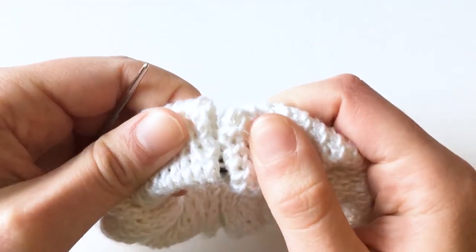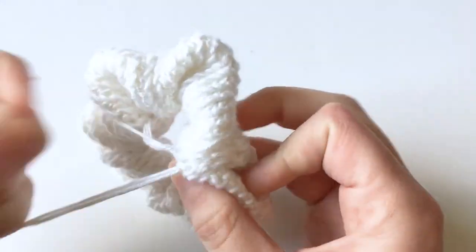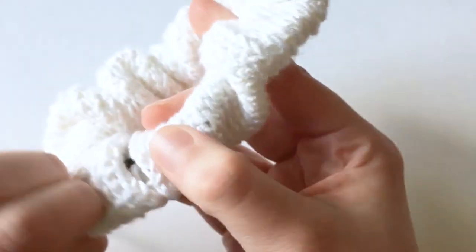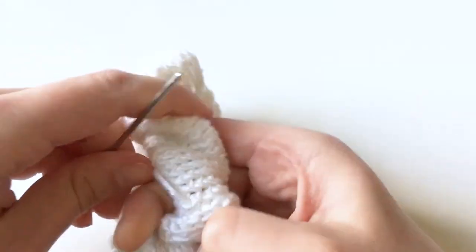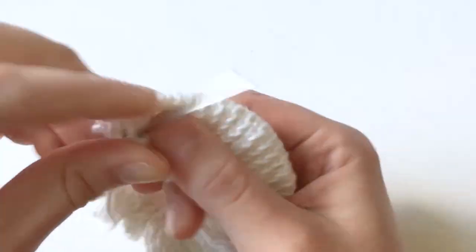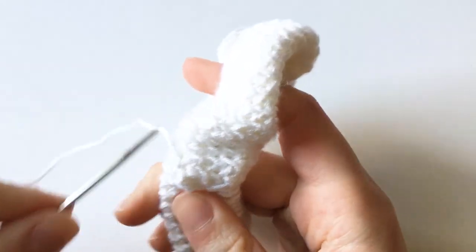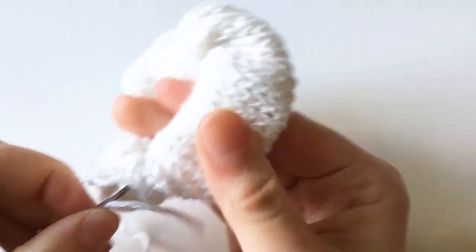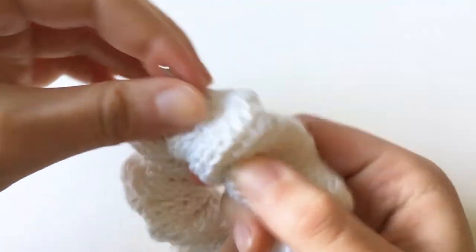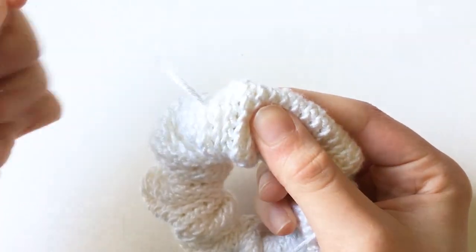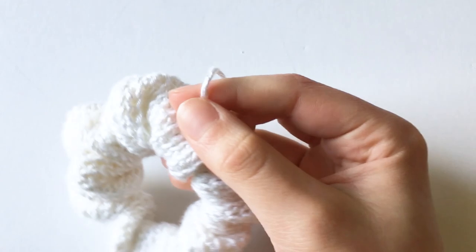This is what it should look like as you can see it closes really nicely. Once you are all the way around, weave the needle through the scrunchie about a couple inches just to weave in that end and then pull it through. Then you can cut it.